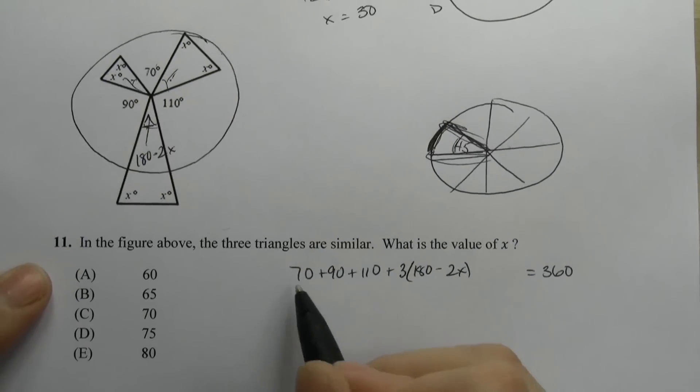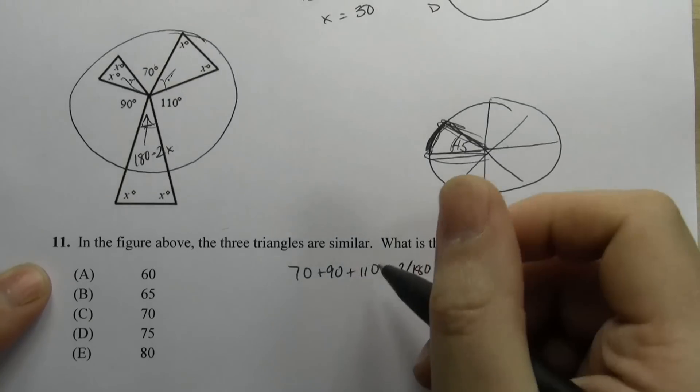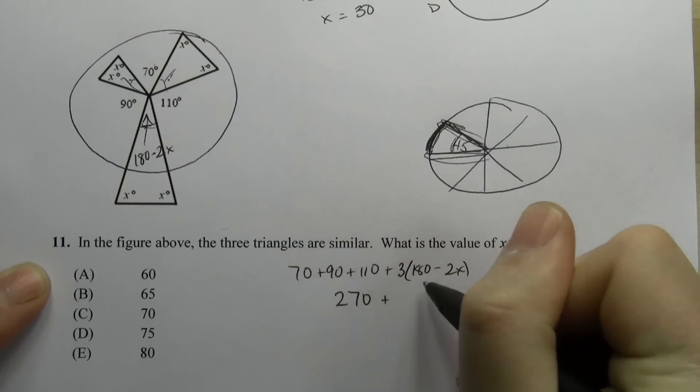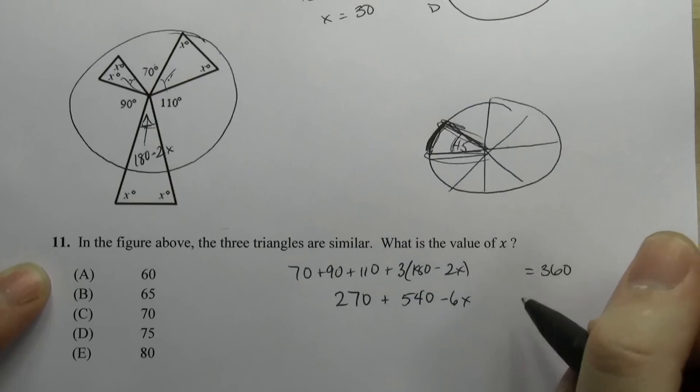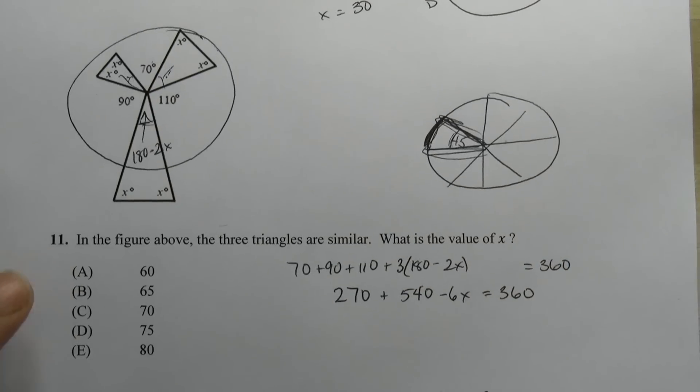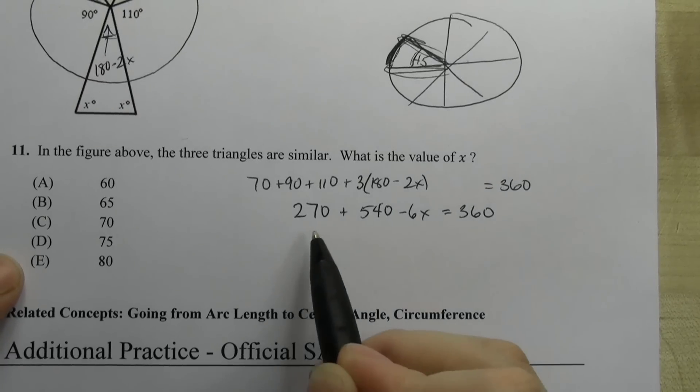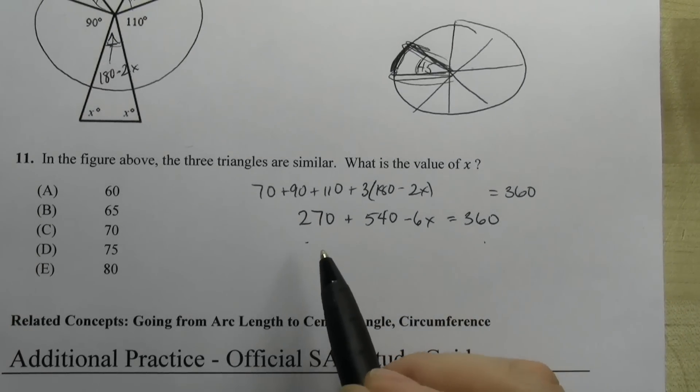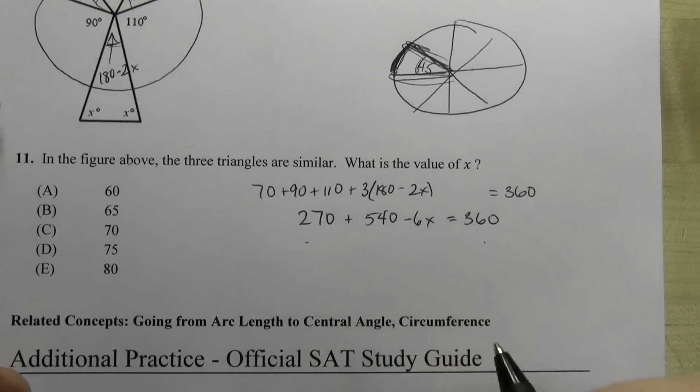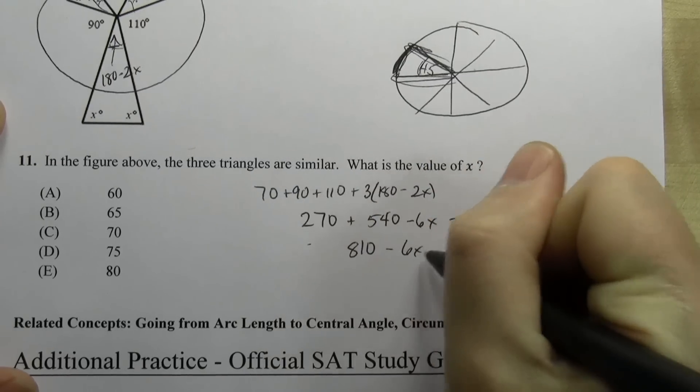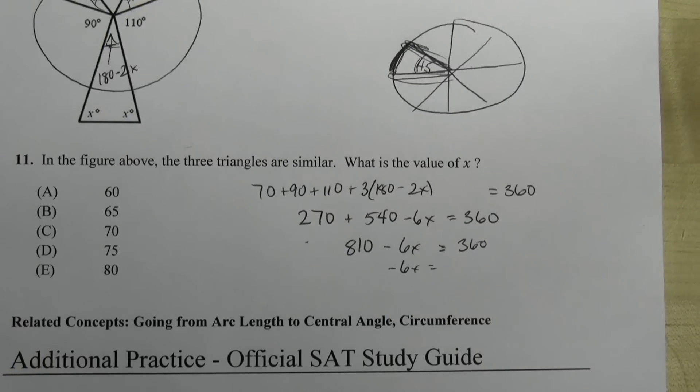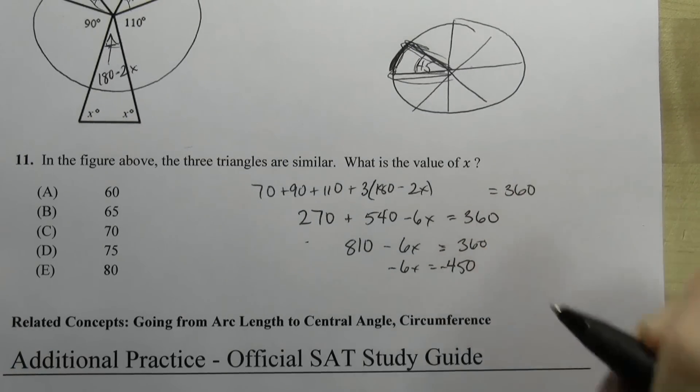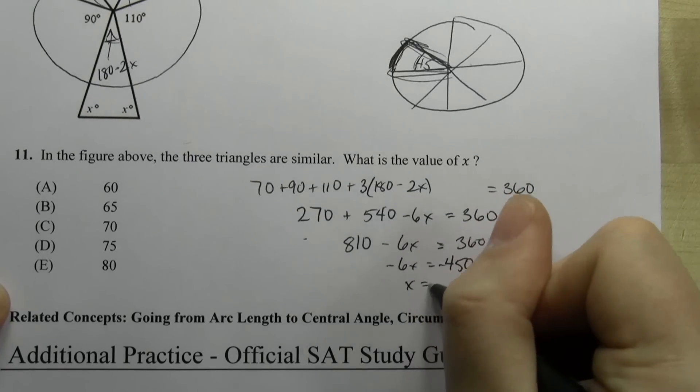All right, so 70 plus 90 plus 110 is 270 plus 540 minus 6X. Make sure you distribute the 3 equals 360. And then we want to simplify. So 270 plus 540 is 810 minus 6X equals 360. Negative 6X equals negative 450. X equals 75.